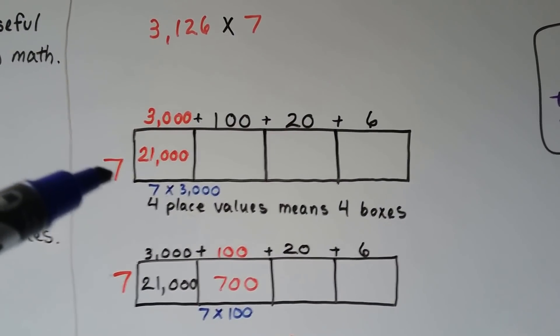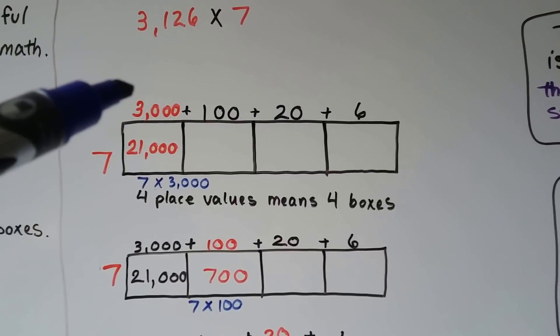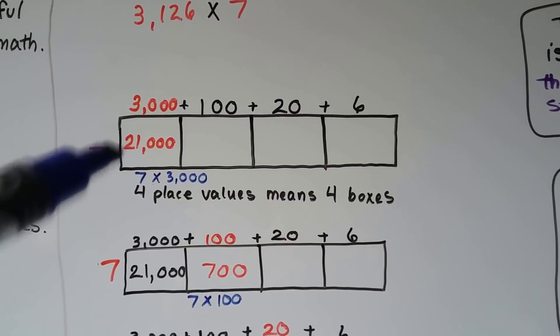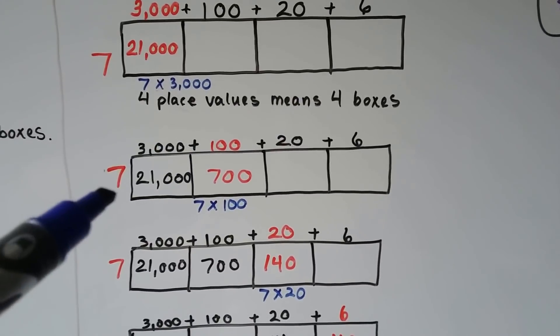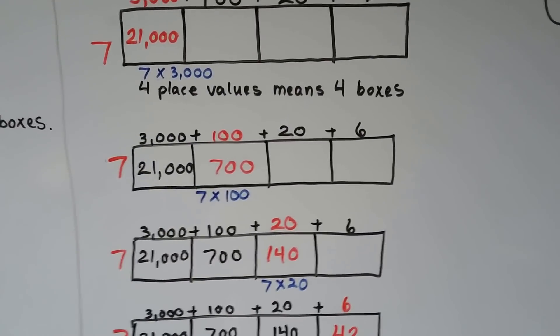And we multiply 7 times the 3,000. That's like 7 times 3 with three zeros. So it's 21,000.